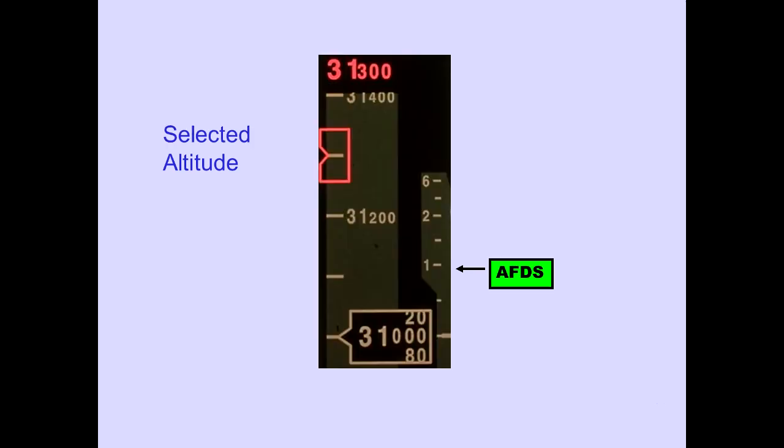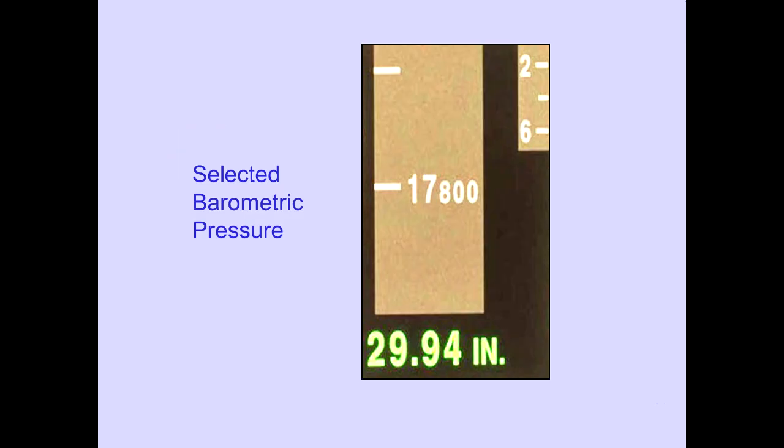The selected altitude is displayed at the top of the altitude tape and by an indicator on the altitude tape. The Autopilot Flight Director system provides this information. The selected barometric pressure is displayed below the altitude indication. Setting the barometric pressure will be discussed later.